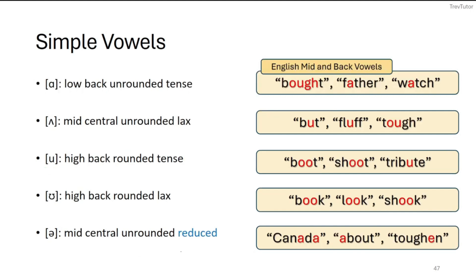Now we have five more vowels that are not front — our mid and back vowels. /ɑ/ is written as a regular 'a' without a hat above it, because the hat represents a different sound that western Canadian English speakers do not use. In 'bot,' 'father,' and 'watch,' this is the /ɑ/ sound. In some dialects it may be represented by an 'or'-like vowel, as in 'bought' versus 'bot.'